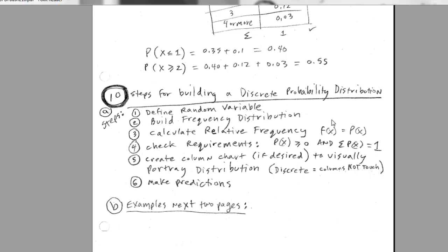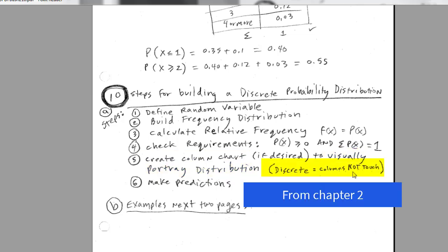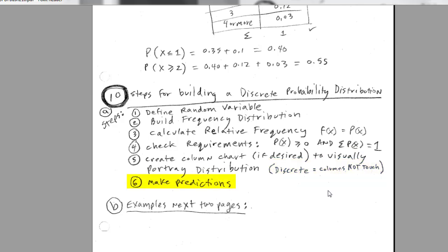Now, the steps for building a discrete probability distribution, we've done some of these already. However, step one: we'll define our random variable, build the frequency distribution, calculate the relative frequencies, check the requirements, create a column chart. If desired, we'll do that a number of times to visually portray our distribution. Remember, with discrete in this chapter, we will not have our columns touching. And then use it, make predictions.